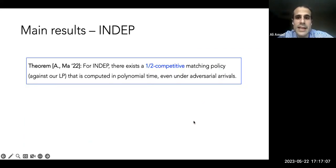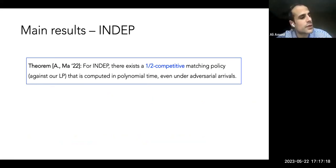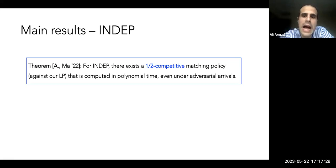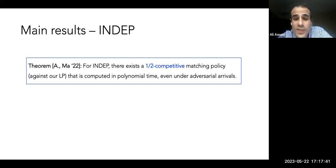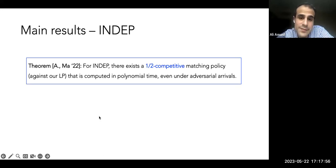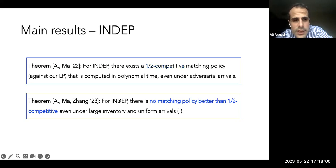The main result is that we can get a half-competitive matching policy against this LP, computed in polynomial time, even under adversarial arrivals — even without controlling the permutation. This is meaningful because half was already the best achievable under adversarial arrivals, as known from the profit inequality literature. We've strictly generalized the class of models we can handle without sacrificing any performance guarantee — we still achieve the same competitive ratio against the offline optimum.